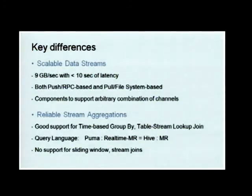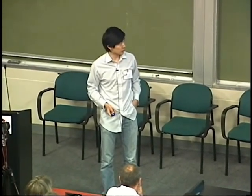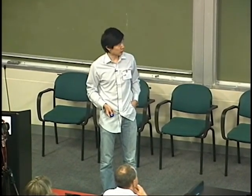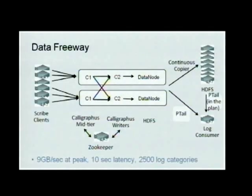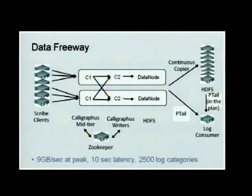We don't have support for sliding windows and stream joins, which are the focus of academic research like the Stanford stream project. For fault tolerance in Data Freeway, the calligraphers writers use ZooKeeper to coordinate — tasks are put in ZooKeeper and writers do leader election for those tasks. Each writer only knows its local picture, not the global picture.